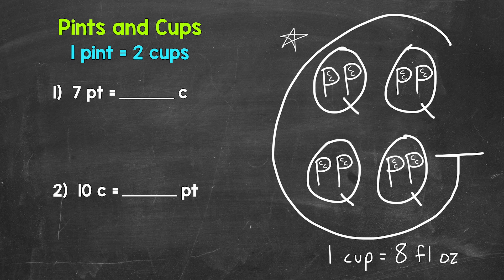So we have two cups, two cups, two cups, seven times. So we need to do seven times two. And that's how we convert from pints to cups. We multiply by two. Now, seven times two gives us 14. Seven pints equals 14 cups.